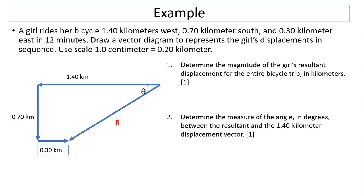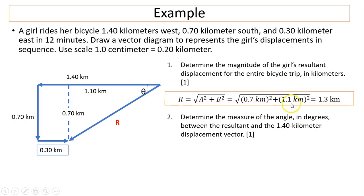Now determine the magnitude of the girl's resultant displacement for the entire bicycle trip. Before we used a graphical method and measured how long R is, then used the scale to determine the length. We can also solve this using Pythagorean theorem. Pythagorean theorem needs a right triangle. It's not obvious where the right triangle is, so you have to make one. Draw a dashed line to make your right triangle. Since this dashed line is the same as 0.7 kilometers, you just move the line over. The other leg is 1.1 because that equals 1.4 minus 0.3. Now we can find the hypotenuse: 1.3 kilometers, similar to the answer we got before.